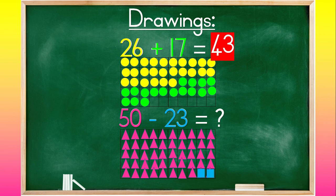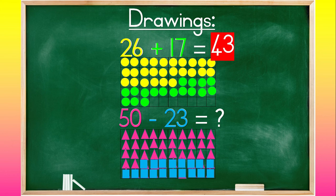Counting and removing: 1, 2, 3, 4, 5, 6, 7, 8, 9, 10, 11, 12, 13, 14, 15, 16, 17, 18, 19, 20, 21, 22, 23. So now let's count how many triangles we have left.